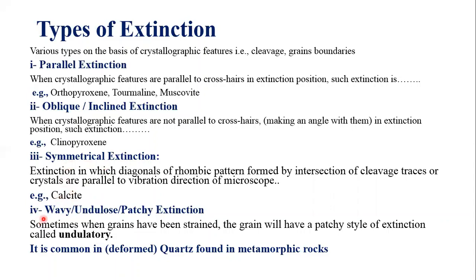Symmetrical extinction is possessed by the mineral calcite. Wavy, undulatory, or patchy extinction — these are different names for the same extinction. Sometimes when grains have been strained or deformed due to applied stresses, the grains will show patchy or wavy extinction. Some parts of the grain become dark while other parts remain lit, and extinction appears in patches across such deformed grains. Such extinction is termed undulose, wavy, or patchy extinction, and it is common in deformed quartz found in metamorphic rocks.